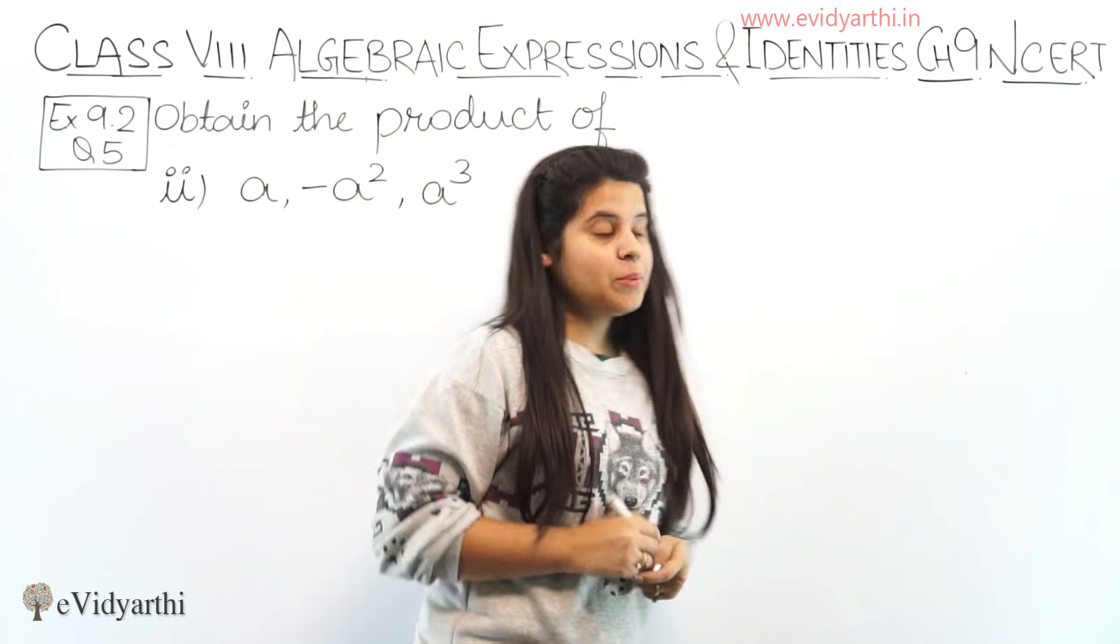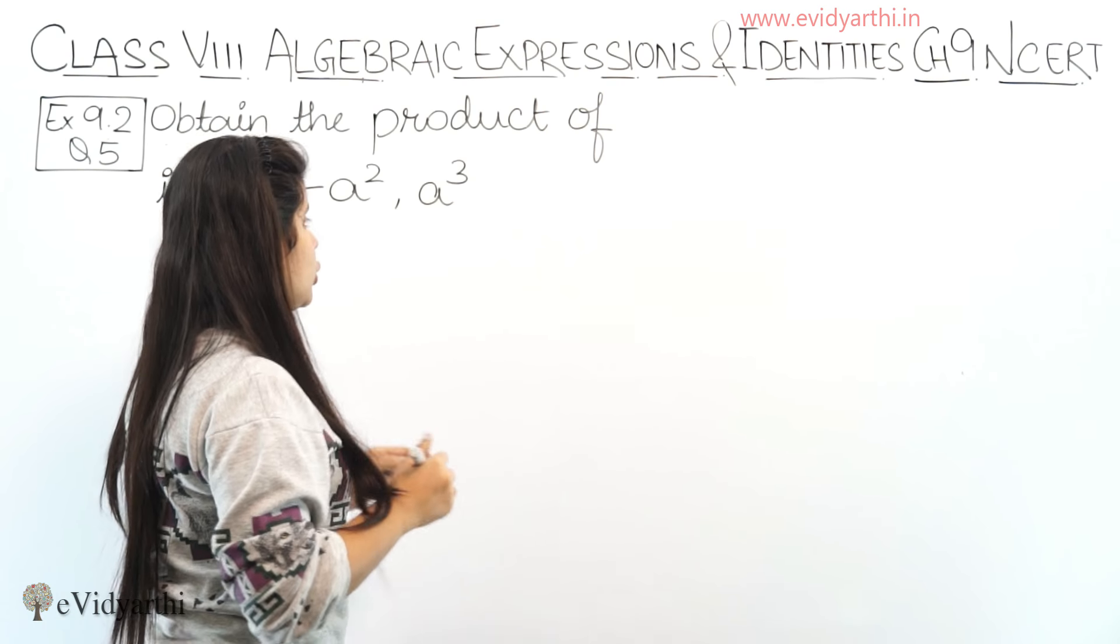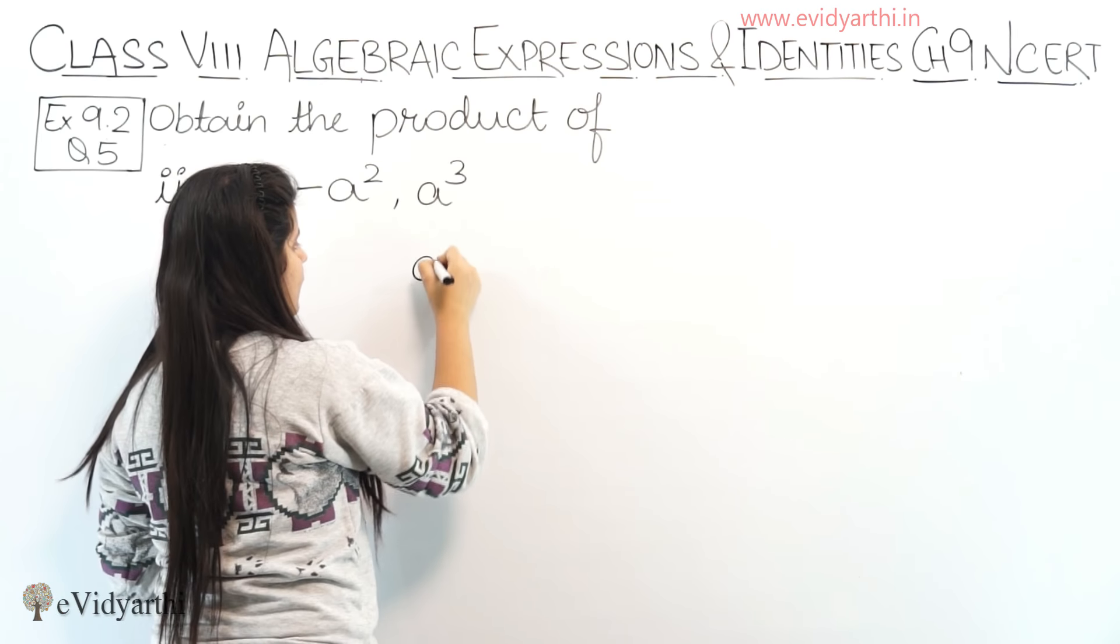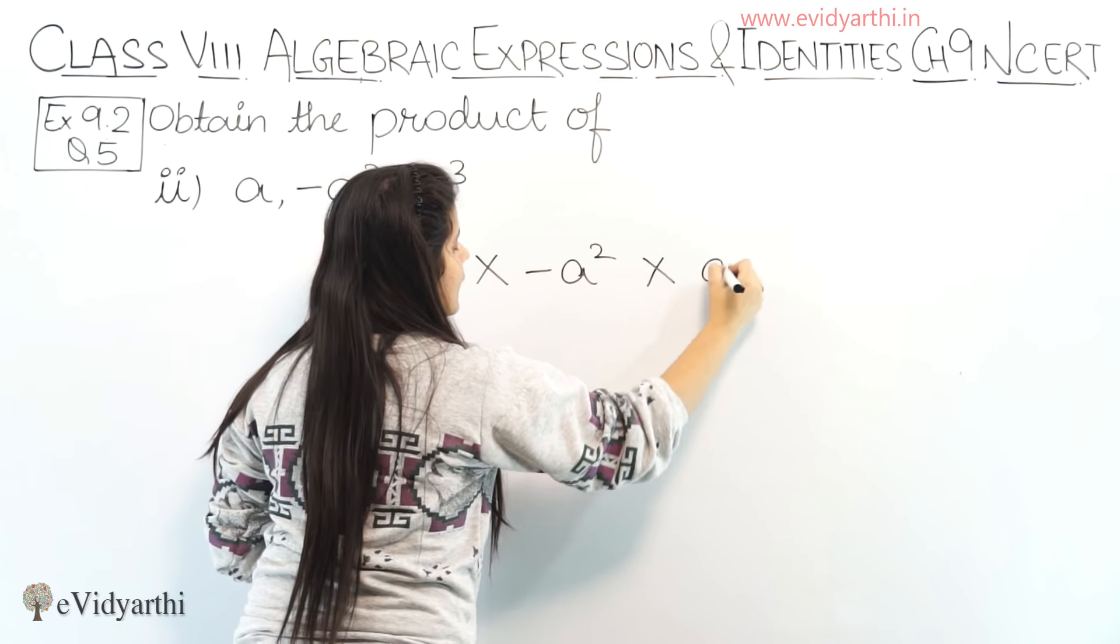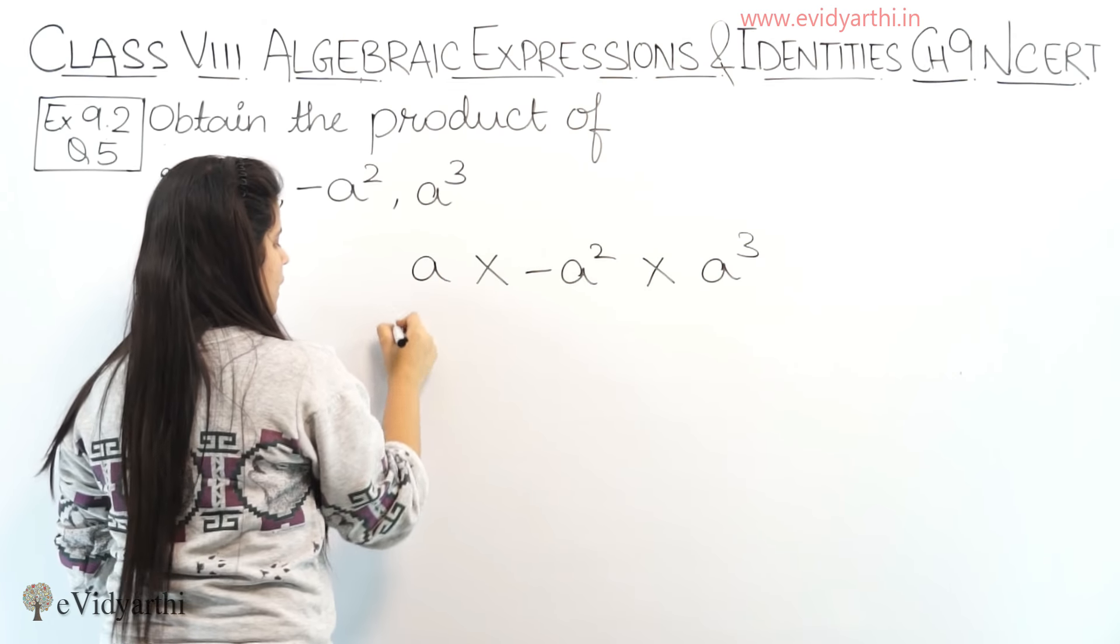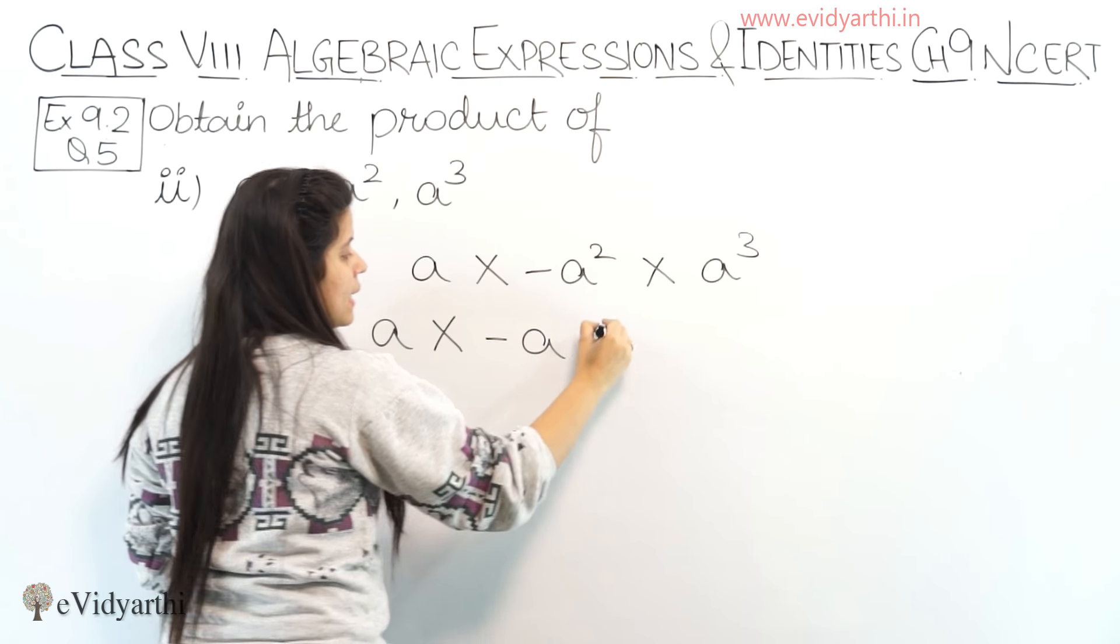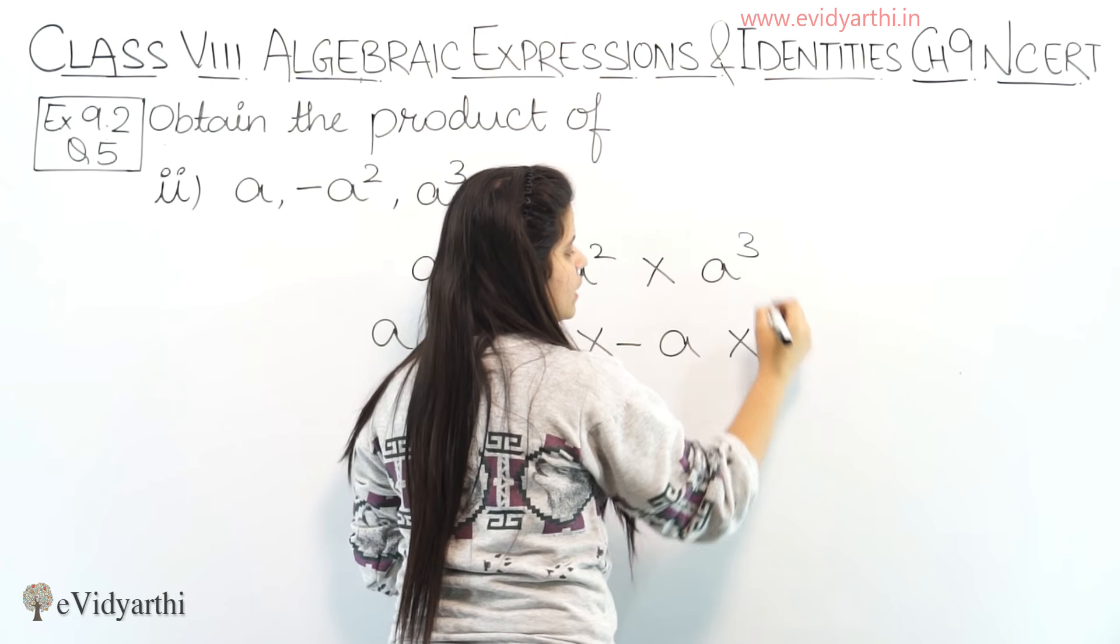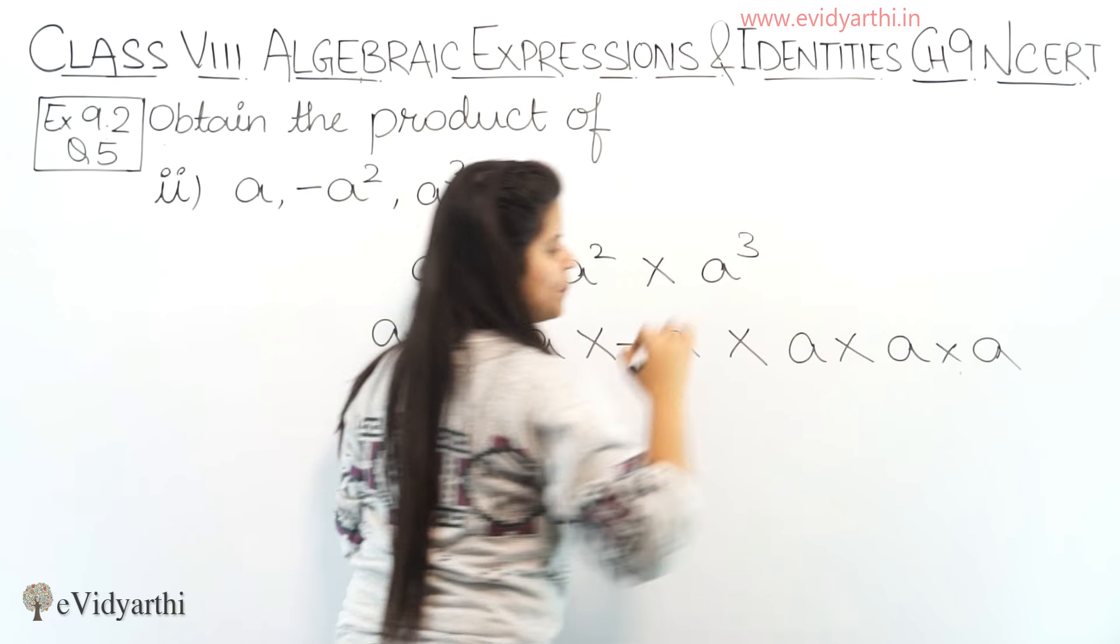Coming to the second part, we have a, minus a square and a cube. Now we have to find this: a into minus a square into a cube. So a will be written as this: minus a ka square means minus a into minus a. Uske baad we have a cube, so a into a into a.